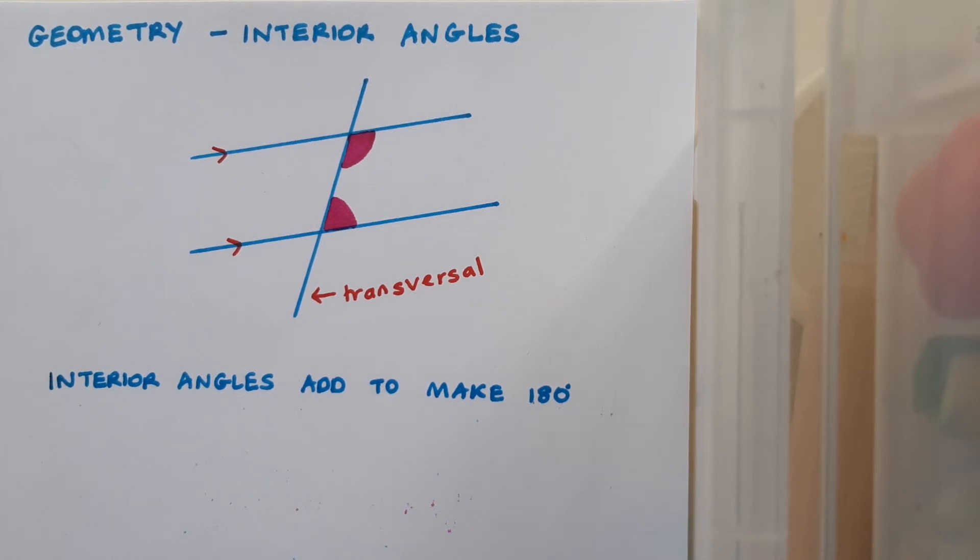There's another pair of interior angles in this diagram also. Where do you think they might be? The angles shaded on the left of the diagram in green are also interior angles and these two green angles add up to make 180 degrees.